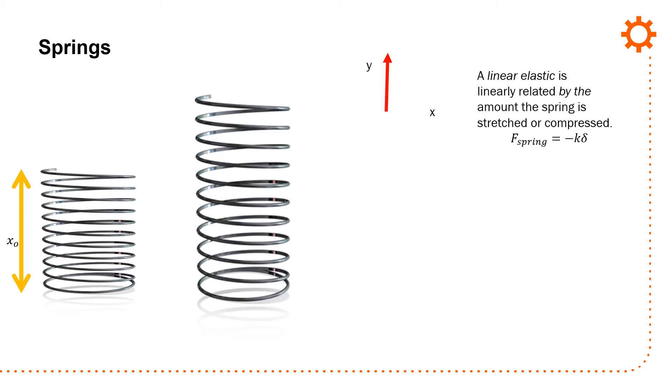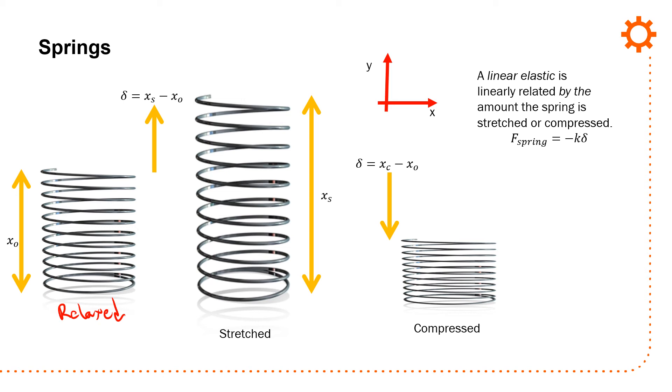Next, we look at springs. I have a spring with a relaxed length of x_0. If I stretch it, the second case here, I stretch it by distance x_s minus x_0. X_s is the total distance stretched, and that's my delta. I can also compress it - here's x sub c, and this will be my delta.